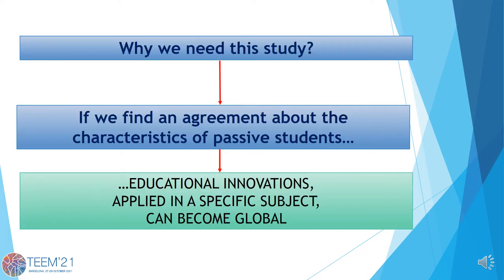Why do this study? If we find an agreement among different educational contexts about the characteristics of passive students, the consequence will be that educational innovations, which are usually applied in specific subjects, can become global and be transferred to any other academic context.